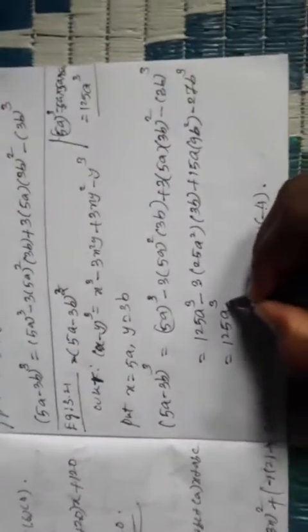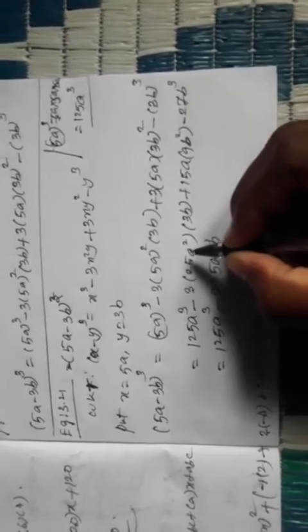So the second term gives minus 225a²b. The third term gives plus 135ab². The fourth term gives minus 27b³. Therefore, (5a - 3b)³ = 125a³ - 225a²b + 135ab² - 27b³. This is the required solution.